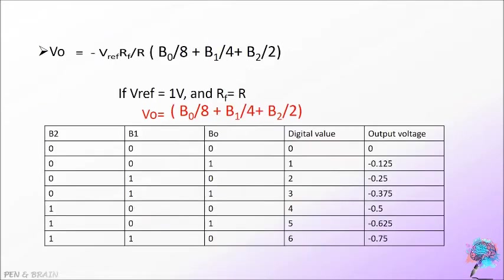Consider a 3-bit R2R DAC where V reference is equal to 1 volt and RF is equal to R. Then the expression for output voltage is V0 by 8 plus V1 by 4 plus V2 by 2.